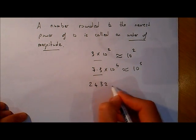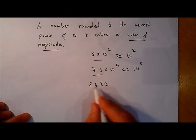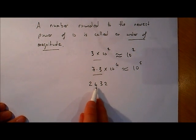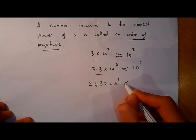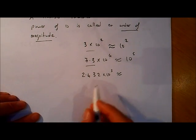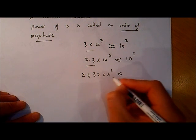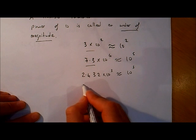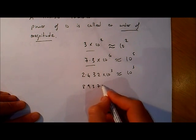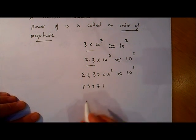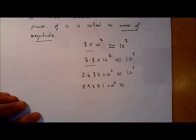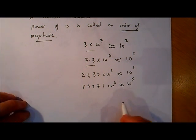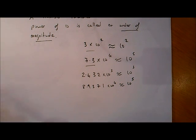Say we have the number 2432 and want to find its order of magnitude. First, convert to scientific notation: 2432 = 2.432 × 10 to the power of 3. Since 2.432 is less than 5, the order of magnitude is 10 to the power of 3. Whereas for 8937, in scientific notation that's 8.937 × 10 to the power of 4 — since 8.9 is bigger than 5, we add 1 to the power, giving approximately 10 to the power of 5.